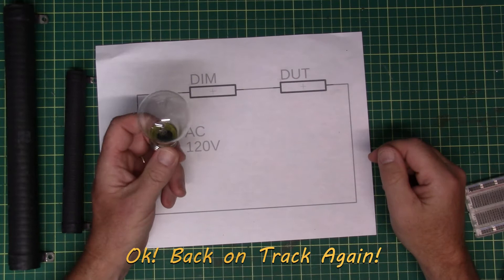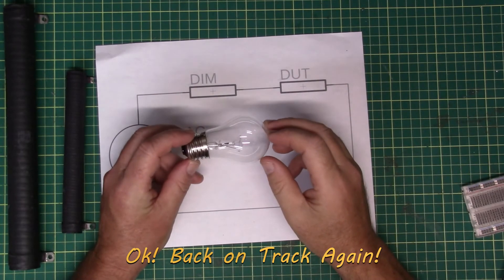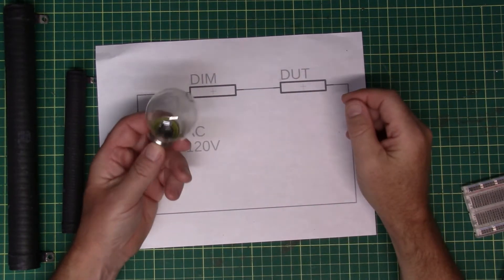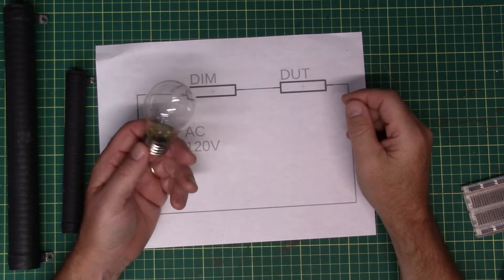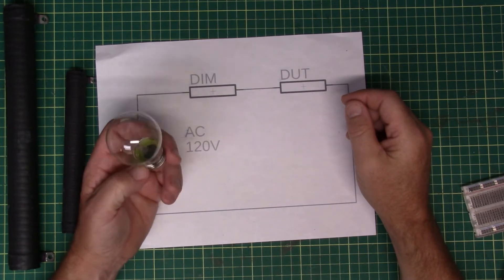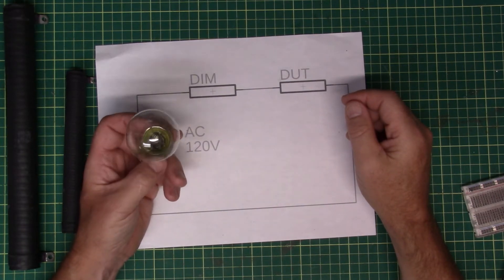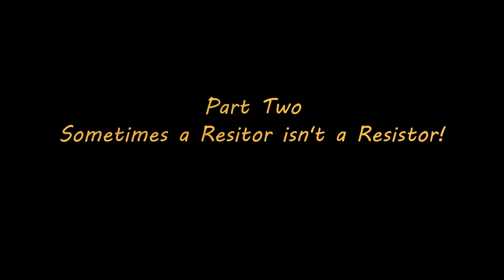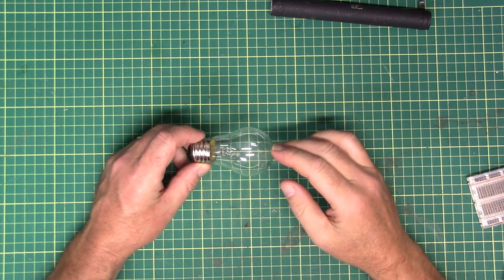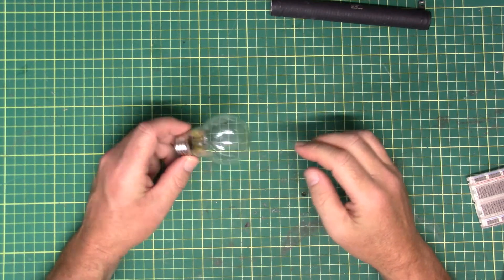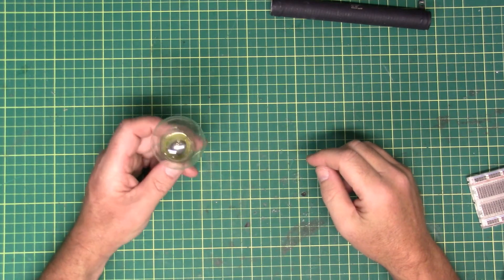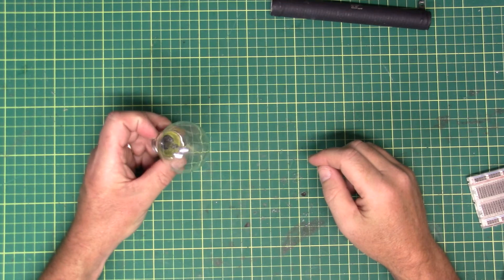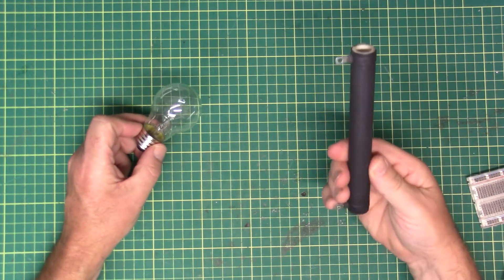Well, as well as that, we can take advantage of another property of the little incandescent bulb. We can take advantage of the fact that an incandescent bulb is a non-ohmic resistor. And I'll explain that directly.